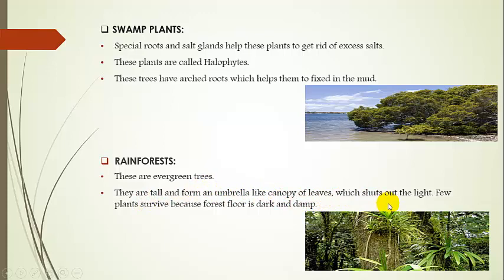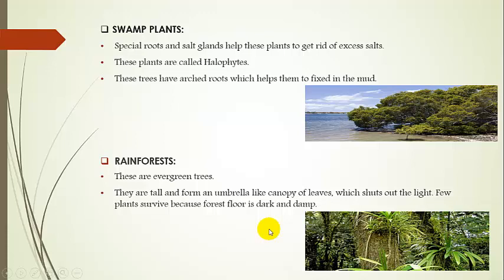Finally, we have rainforest plants. These are evergreen trees — they are tall and form an umbrella-like canopy of leaves which shuts out the light. Few plants survive because the forest floor is dark and damp. However, they make their own food and are not parasites. Plants which grow at the top of the trees are called epiphytes.